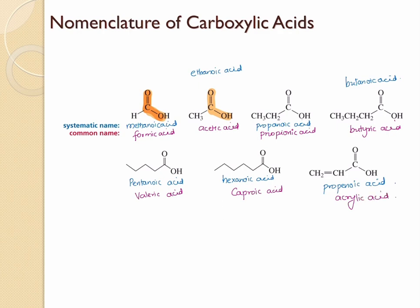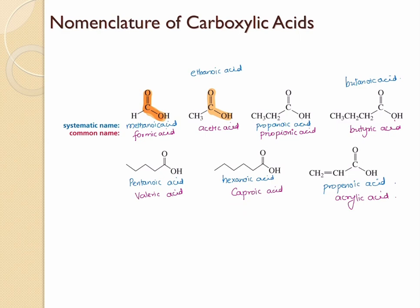All of these common names need to be memorized — unlike systematic names, we cannot identify them by rules. Here's how to remember valeric acid and caproic acid: for pentanoic acid there are totally five carbons, and the Roman numeral for five is V, so it's valeric acid. For hexanoic acid there are six carbons — when you write six you have to first put C, so you can account for caproic acid.